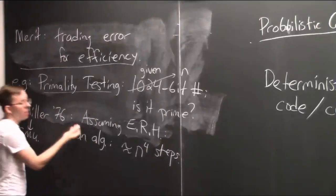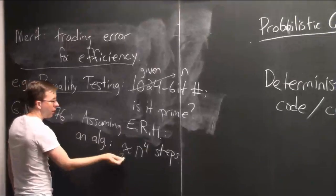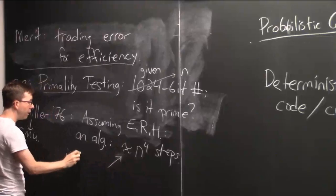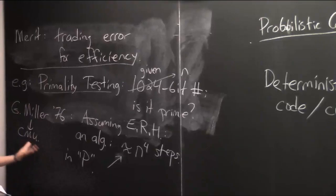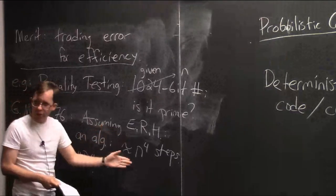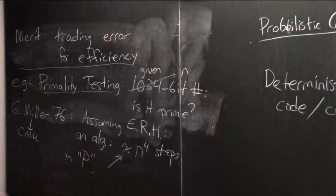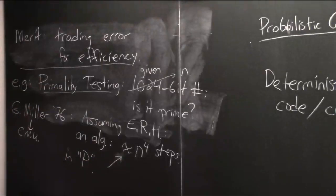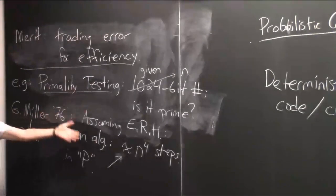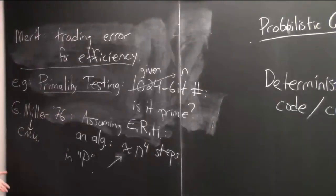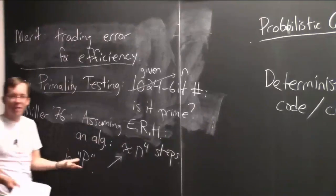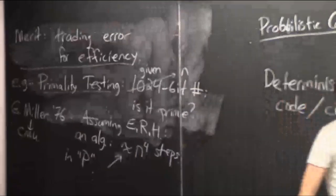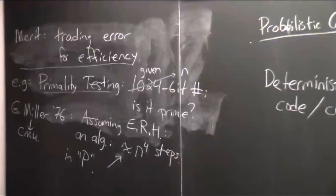There are actually very clever, sophisticated algorithms for efficiently determining whether a number is prime. This started with Gary Miller in 1976 — Gary Miller is a professor here at CMU, and I think this was his PhD thesis. He showed that assuming the extended Riemann hypothesis, a conjecture from number theory — kind of like the P versus NP conjecture of number theory, very well believed but famously nobody knows how to prove it — he gave an algorithm for primality testing that takes about n to the fourth steps to test if an n-bit number is prime.